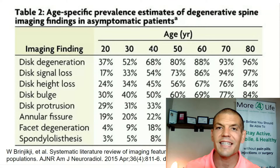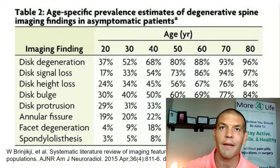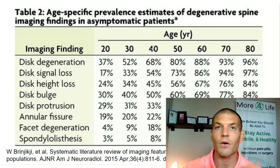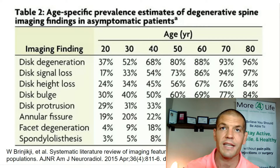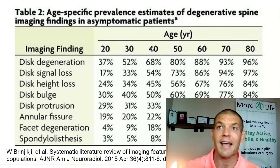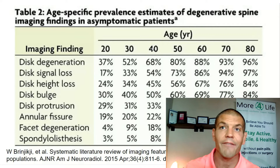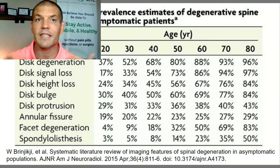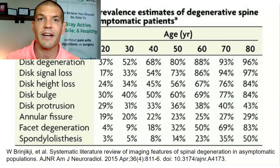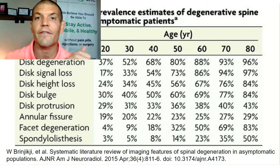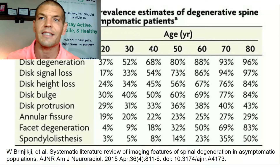Disc height loss is also fairly common: about a quarter of people in their 20s, a third in their 30s, half in their 40s and 50s, and so on. So again, another very common finding. Then facet joint degeneration, or degenerative joint disease — that's not so common in young people.